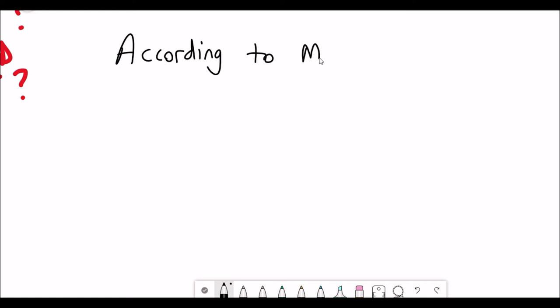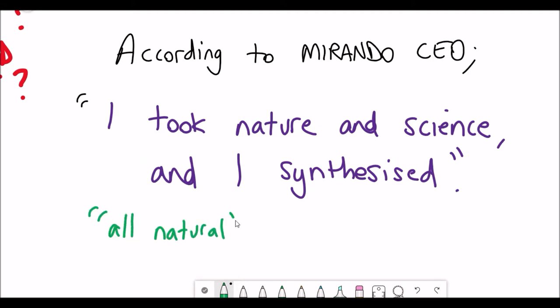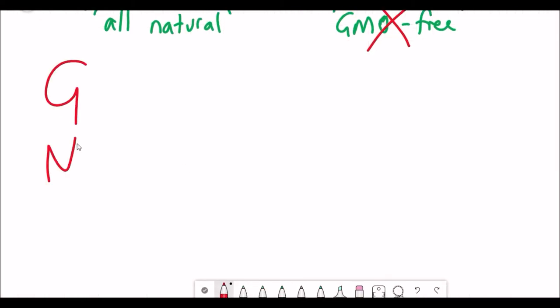Going back to the super pigs then, how are they actually created? Well, according to the CEO of Miranda, I took nature and science and I synthesized. Yeah, that doesn't really leave you off much. In the film, they claim that these super pigs are all-natural and GMO-free, but that isn't the truth, as there is no literal way that they could have naturally produced these super pigs.